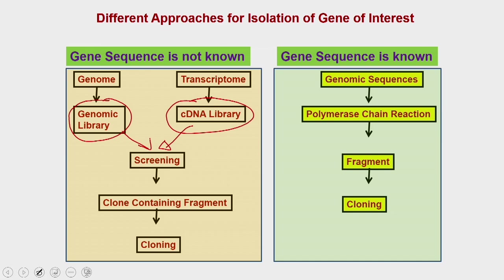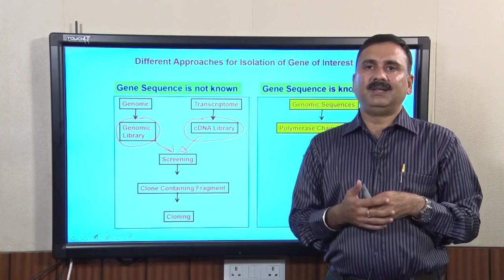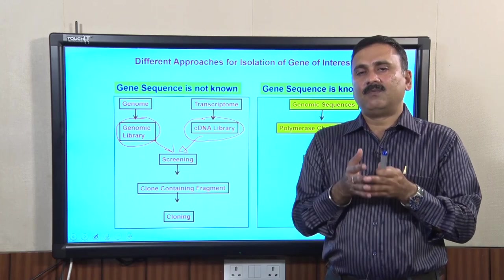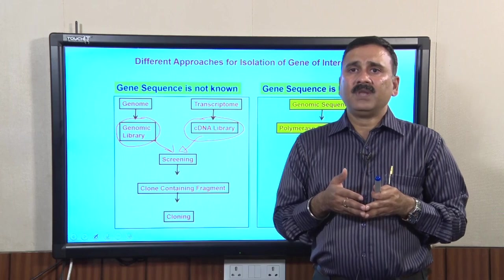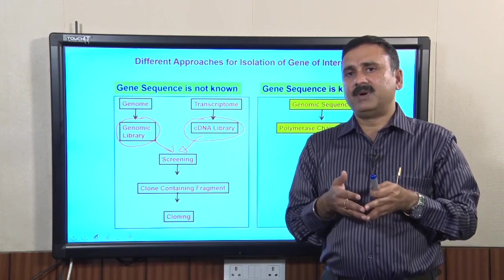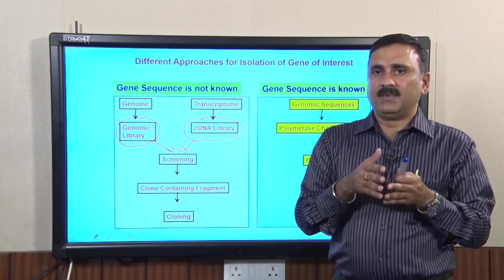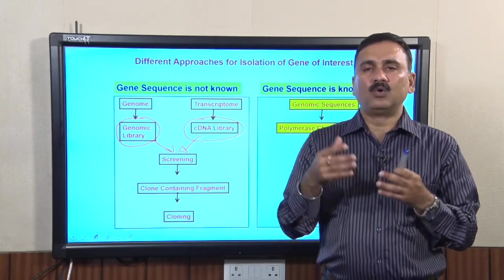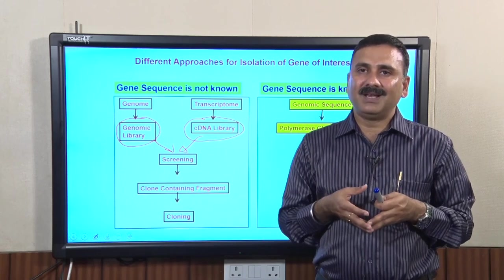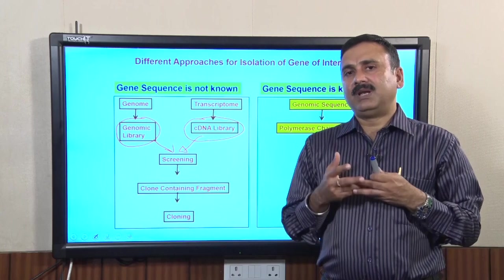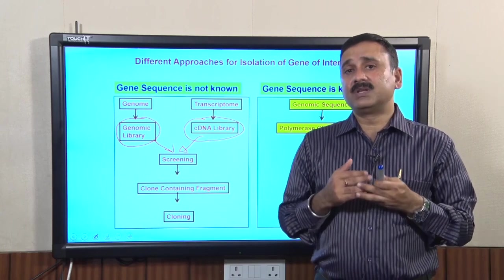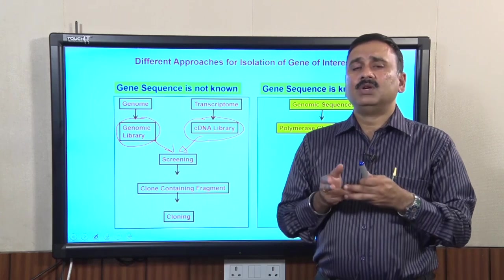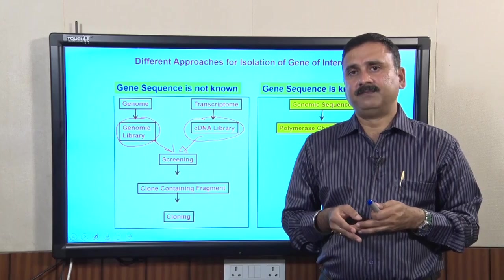In summary, what we have discussed in this lecture: the different approaches available to isolate a particular gene sequence — when the gene sequence is not available versus when it is known — and how to prepare a genomic library and a cDNA library. In the subsequent lecture, we will study how to screen the genomic or cDNA library to isolate your specific gene sequence. Thank you.